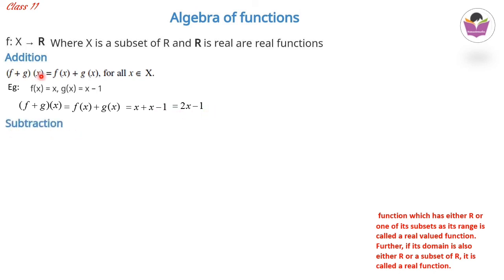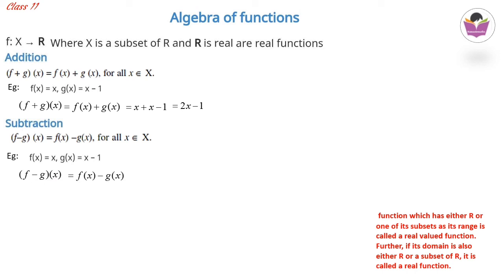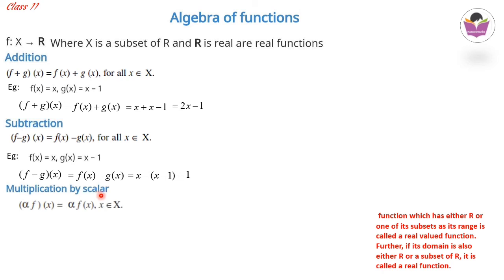For subtraction: (f − g)(x) = f(x) − g(x). Example: with f(x) = x and g(x) = x − 1, then (f − g)(x) = x − (x − 1) = x − x + 1 = 1.